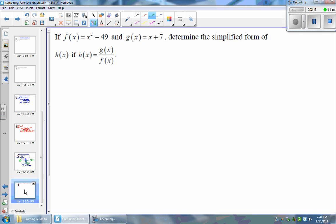If f of x is equal to x squared minus 49 and g of x is equal to x plus 7, you want to determine the simplified form of h of x if h of x is the quotient of these two functions. Alright, so let's start with what we need here. h of x is equal to g of x over f of x.